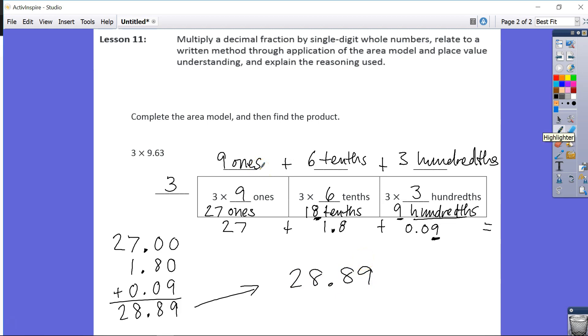A couple of key points. When you are doing your partial products, we have our 1's. Make sure that you understand that this is in your 1's place, and this is in your 10's place. We have a lot of students who are adding this up, and they're not putting that 7 in the 1's place, or that 2 in the 10's place. Same thing here, especially with the tenths. We have students who are writing this 18 tenths as 1.8. That's incorrect.